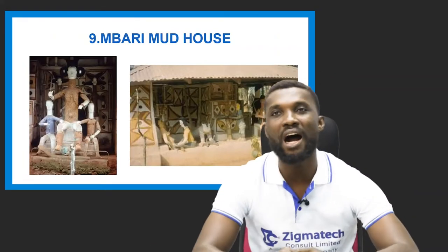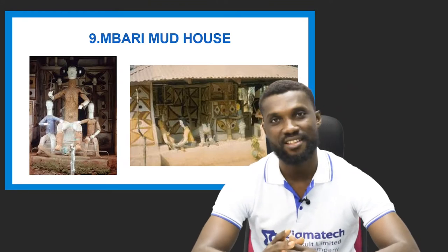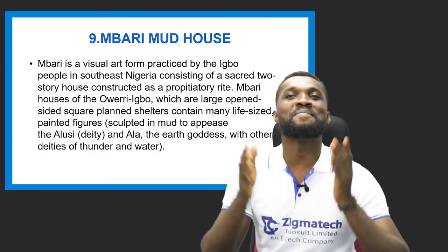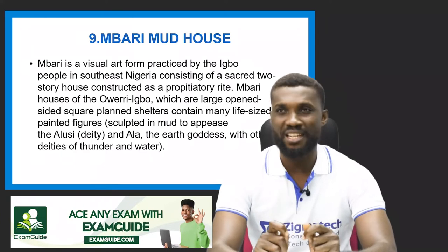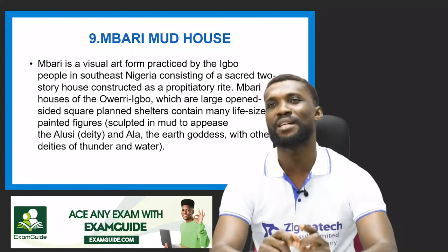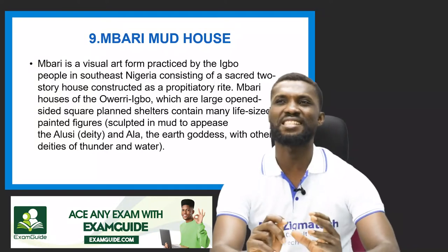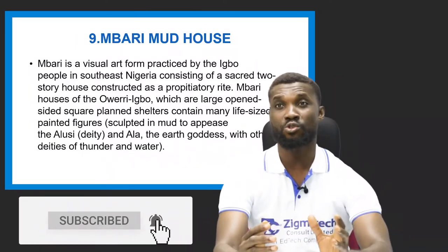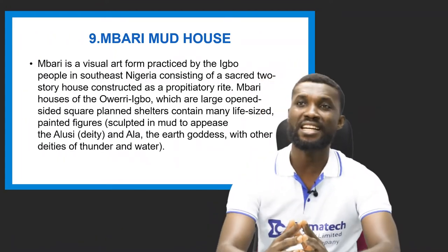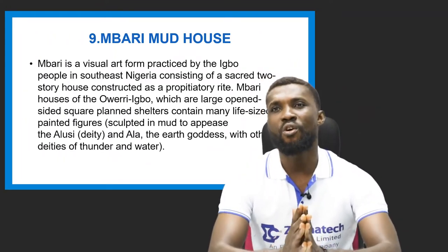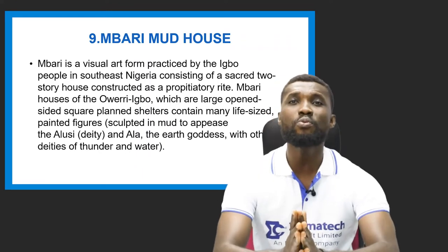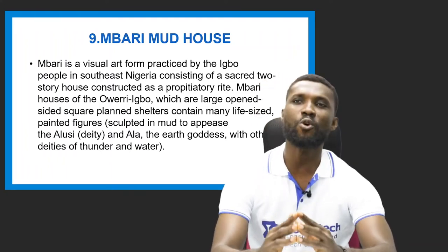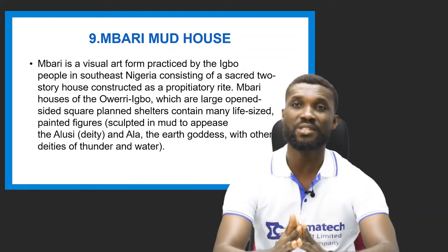Today, we'll be looking at the Mbari Mud House — you can call it the Mbari art. Mbari is a visual arts form practiced by the Igbo people in the southeastern part of Nigeria, consisting of a sacred building — a two-story house constructed as a proprietary right. The Mbari Mud House of the Owerri Igbo, which are large, open-sided, square-planned with shelter, contain many life-sized painted figures, sculptures in mud to appease the Ala, which is a deity.